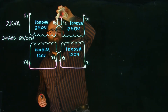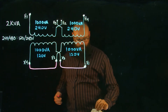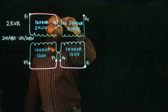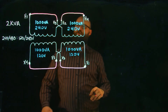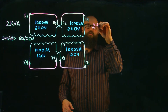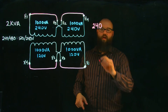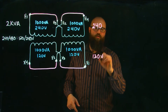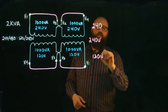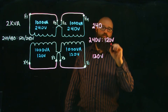This time we're going to remove the series connection on the primary and parallel it up. With two 240 volt coils in parallel I end up with 240 volts on the primary, and with the secondary still in parallel I end up with 120 volts on the secondary. That gives us a 240 volt step-down to 120 volt transformer.